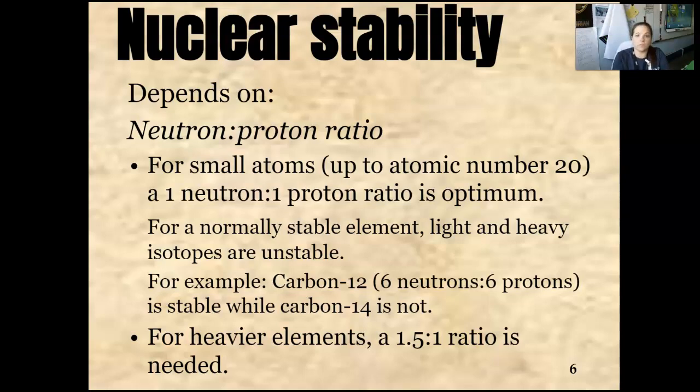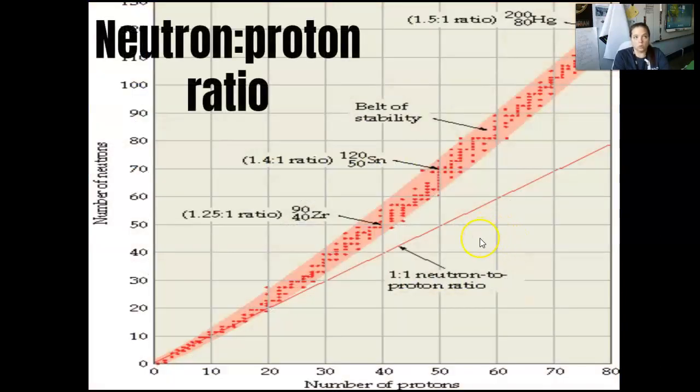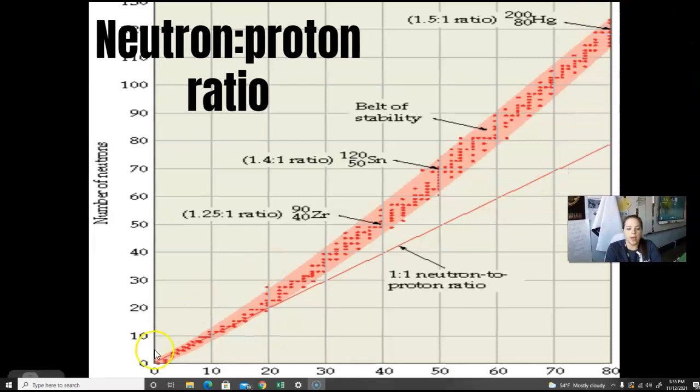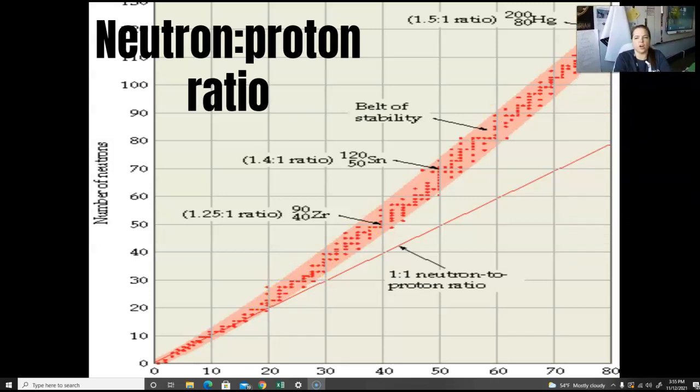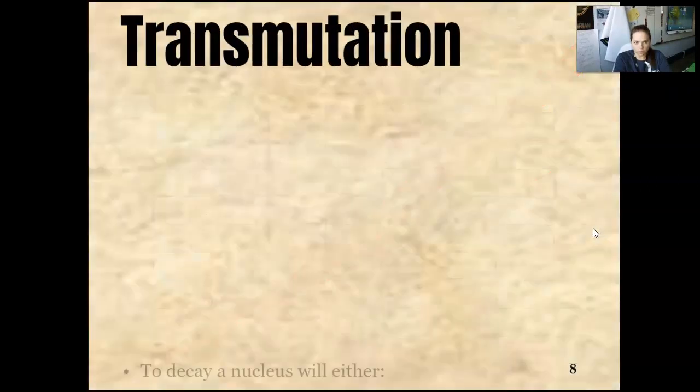Normally stable elements are light and heavy isotopes are unstable. For example, carbon-12, six and six, that's wicked stable, but carbon-14, it's not. For heavier elements, there is a 1.5-to-one ratio which is needed. And you can see right here, as you go up, you need a better ratio to stay very stable. There's that one-to-one, and once it hits 20, it's gone. Then you need the one-and-a-half-to-one.